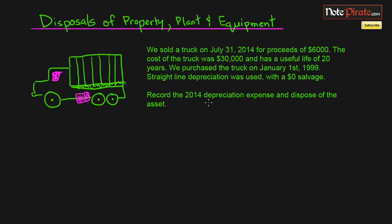We're going to do two things in this presentation. First, we're going to record the depreciation expense for this truck in 2014. Then we're going to record the entry for the disposal of this asset and the gain or loss that goes with it. We sold a truck on July 31st, 2014 for $6,000 cash. The cost of the truck was $30,000 when initially purchased, with a useful life of 20 years, purchased on January 1st, 1999. Straight-line depreciation was used with a $0 salvage value.